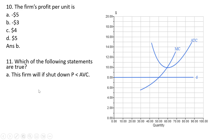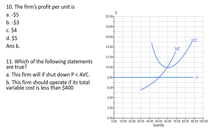Question 11: which statements are true? This firm will shut down if price is less than average variable cost—true for any firm. If price per unit is less than variable cost per unit, the firm should minimize losses by shutting down. Answer choice B: this firm should operate if its total variable cost is less than $400. Total revenue is 8 times 50, or $400, so the firm should operate if total revenue exceeds total variable cost. Answer B is correct.